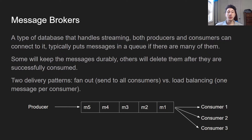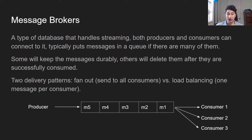So let's talk about those message brokers because that's kind of the most important concept of this video. Message brokers are a special type of database for streaming. All they basically do is allow producers and consumers to connect to them. The producers can push messages to them, and the consumers can go ahead and automatically pull messages from them. Some keep those messages durably, which means that even after they've been sent to a consumer, they still stay in the message broker, and others don't — they just go ahead and delete them.